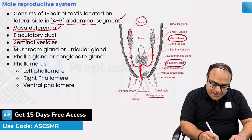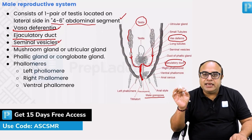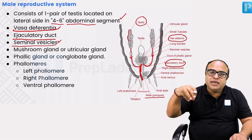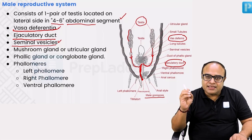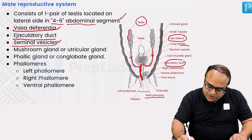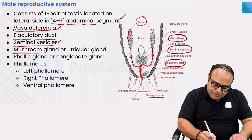Then we have seminal vesicles. At the point where the two vas deferens are meeting, a gland is present which is known as seminal vesicles. The role of seminal vesicles is storage of sperms. If asked in the NEET examination, the function of seminal vesicles is storage of sperms.